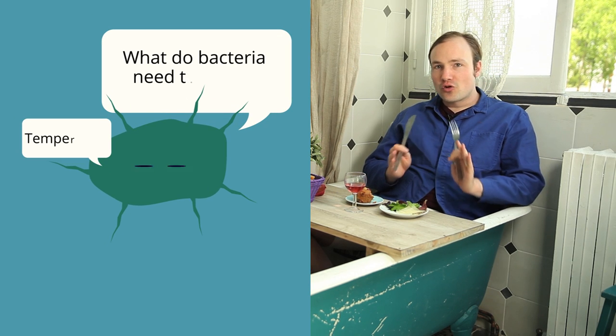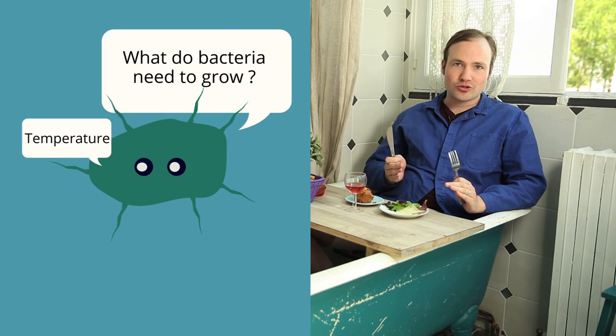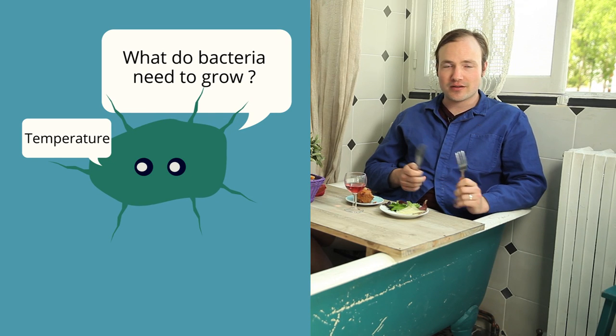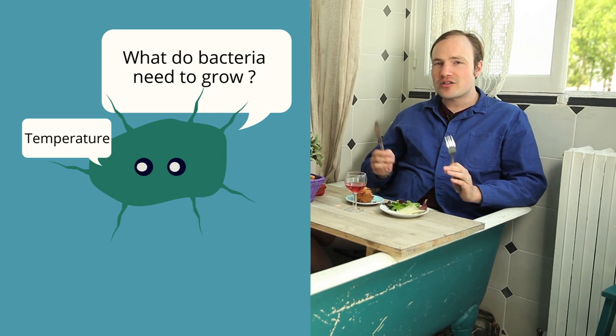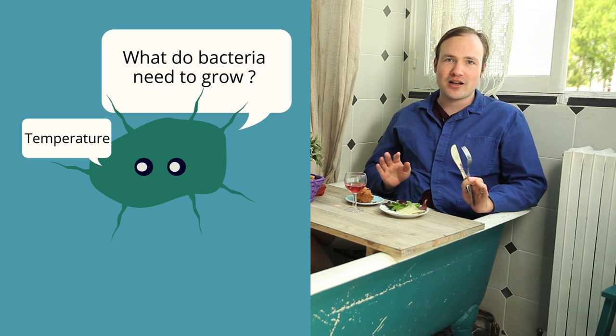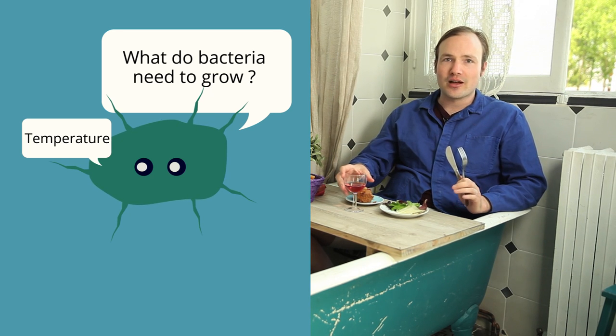Temperature. Normal bacteria are happy between room temperature and body temperature, so between 20 and 37 degrees. Sure, there are some super-frico bacteria that can survive at 100 C, but you won't find them in a normal lab.